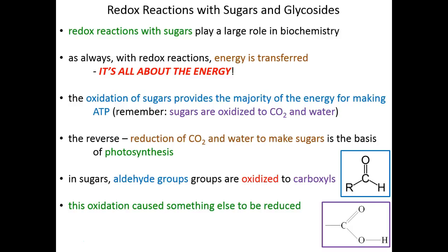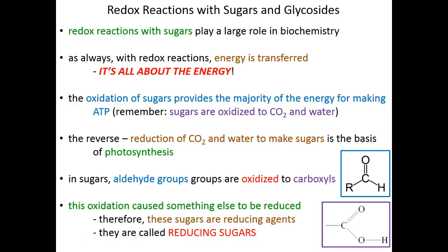What that really means is that this sugar aided in something else being reduced — in other words, this sugar gave its electrons to something else. Any molecule that aids in the reduction of something else is a reducing agent. Therefore this sugar was a reducing agent, and these sugars are specifically referred to as reducing sugars. They are able to give their electrons up to other things and can cause other things to be reduced.